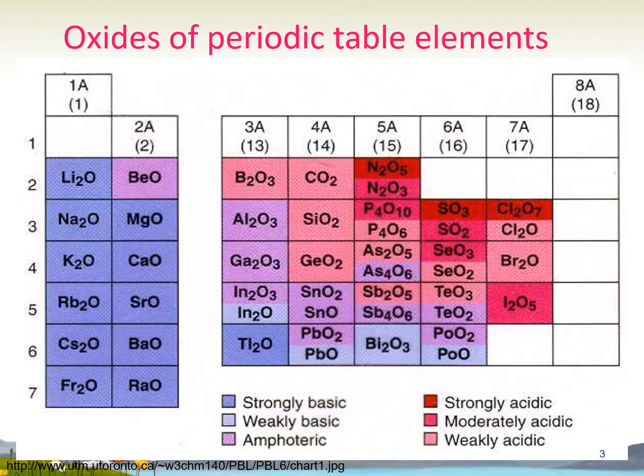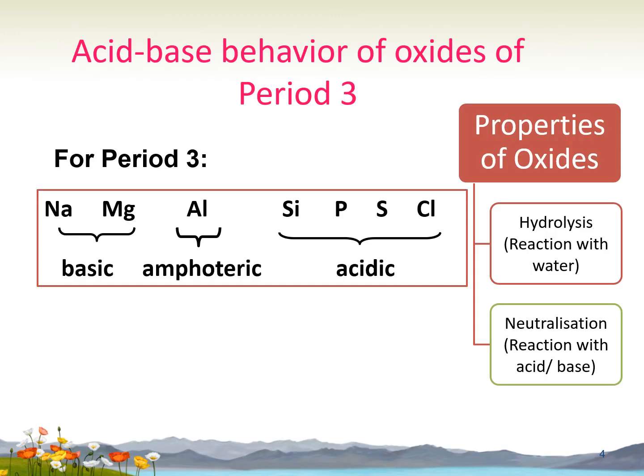The oxides of period 3 elements can be divided into 3 parts: basic oxide, amphoteric, and acidic. Sodium and magnesium are basic oxides, aluminium is an amphoteric oxide, and silicon, phosphorus, sulfur, and chlorine are acidic oxides. We will not discuss argon because argon does not react with any acid or base.